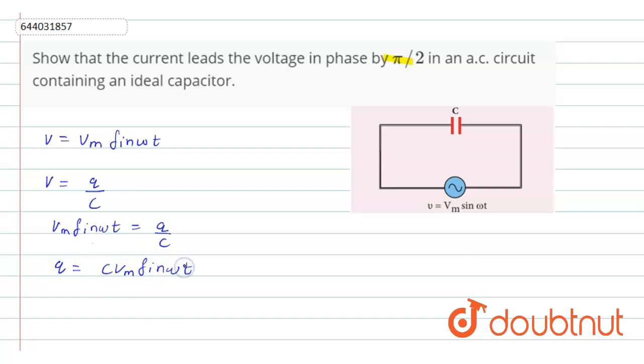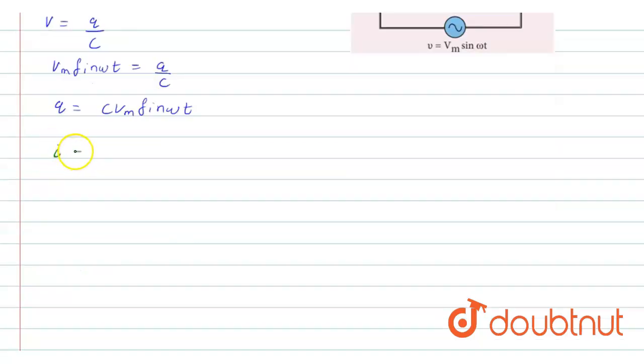Now we know that current equals to dq by dt. Now by putting the values, what we get is d by dt of C vm sin ωt.